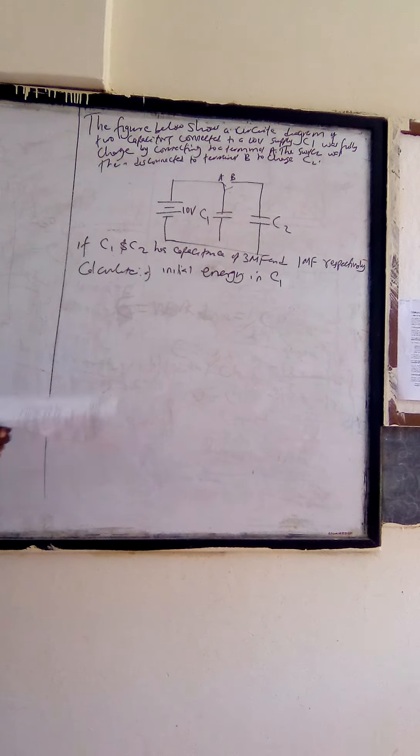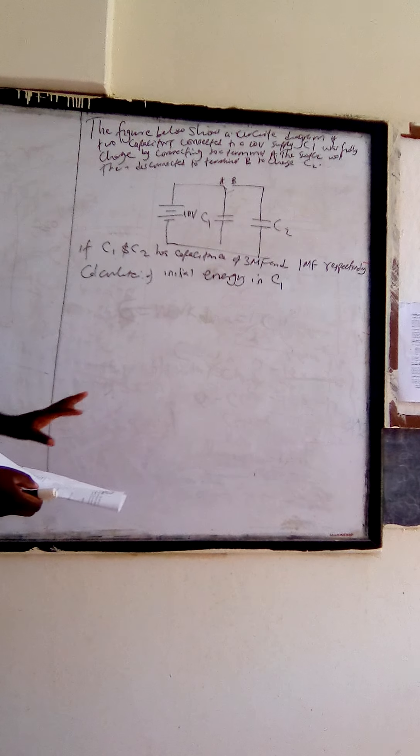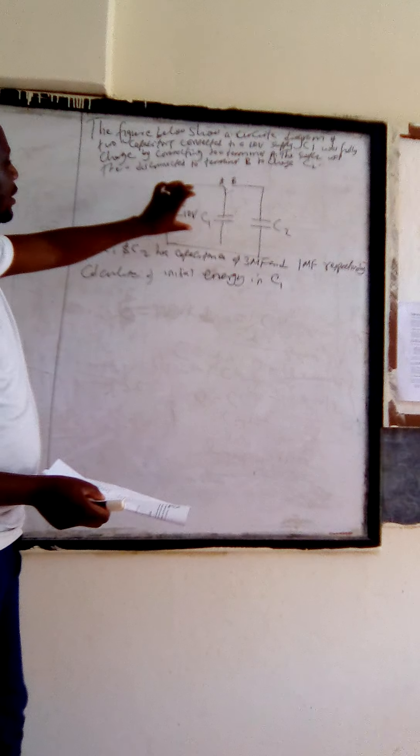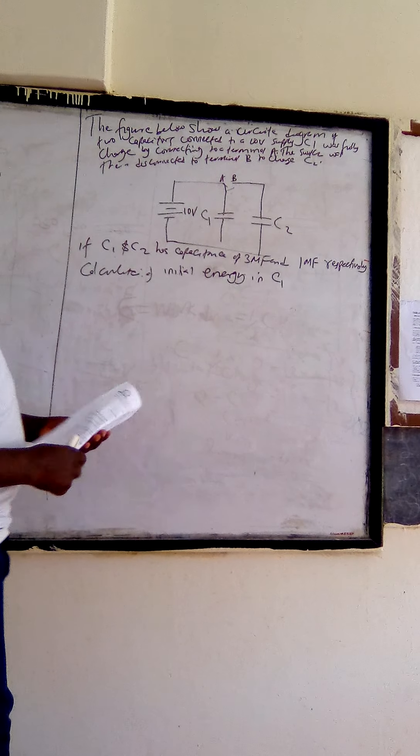If C1 and C2 have a capacitance of 3 microfarad and 1 microfarad respectively, calculate A: Initial energy in C1. So in this case you want to get the initial energy in C1 before we charge it.